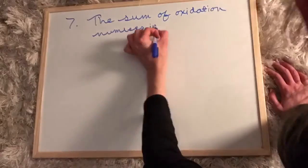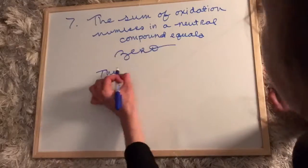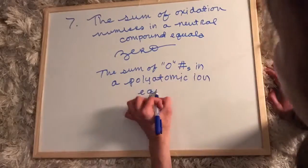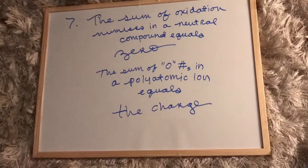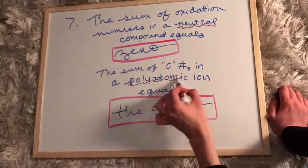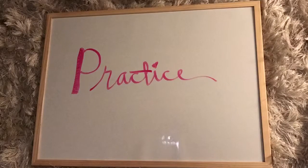And lastly, number seven is that the sum of oxidation numbers in a neutral compound equals zero, whereas in a polyatomic ion, they equal that of the charge. With those seven rules in mind, let's move on to some practice.